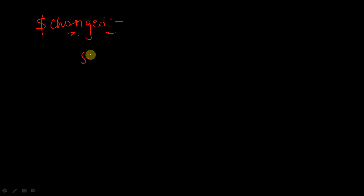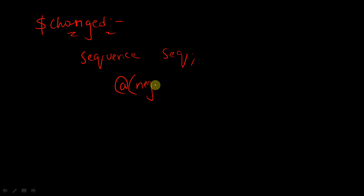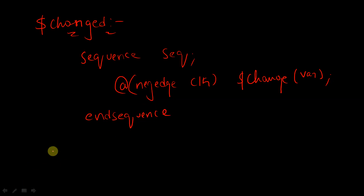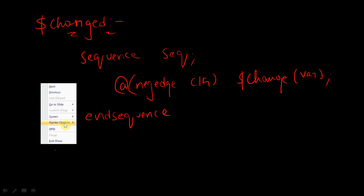So within a sequence, first let me declare a sequence — let's say it is SEQ. And in this sequence, I am going to write, let's say at the negedge of clock, $changed of some variable, let's say var. So if there is any change in this variable between the current evaluation point and the previous evaluation point, then it is going to return true, or else it is going to return false.